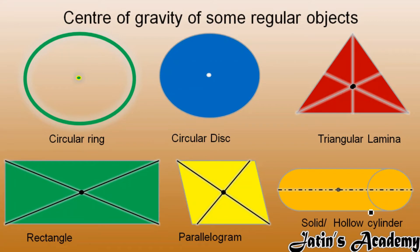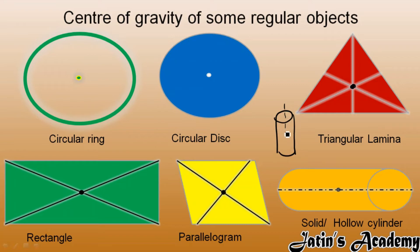For a solid or hollow cylinder, we consider its axis — the symmetric axis. The midpoint of this symmetric axis gives us the center of gravity of the solid or hollow cylinder.